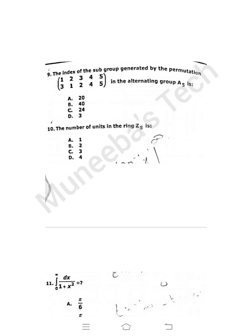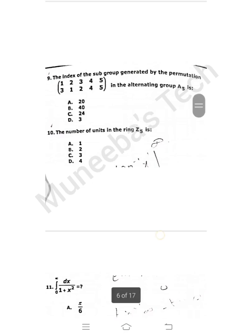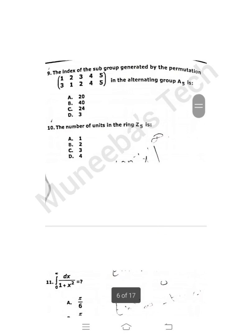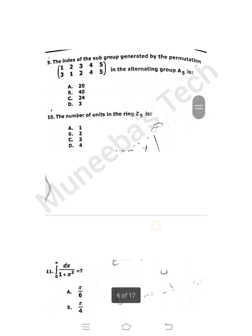Question number 10: The number of units in the ring Z5. When we find the unit of any ring, we skip 0 and consider every other element less than the given n value. Here n is 5, so we start from 1 and go up to 4. So 1, 2, 3, and 4 are the units in ring Z5. Total numbers are 4, so option D is correct.